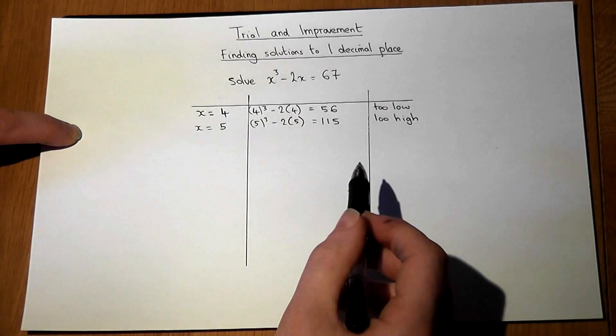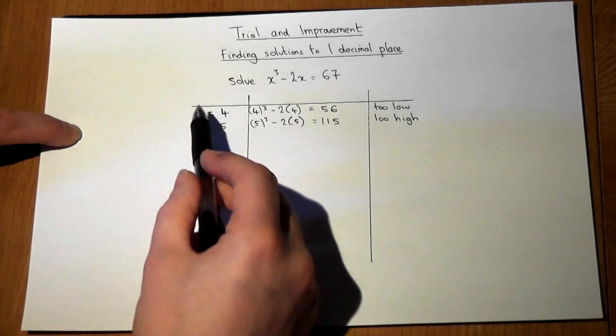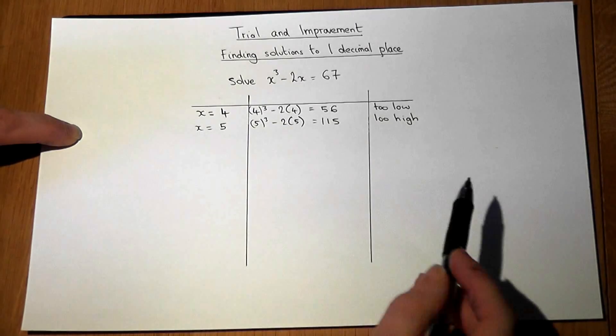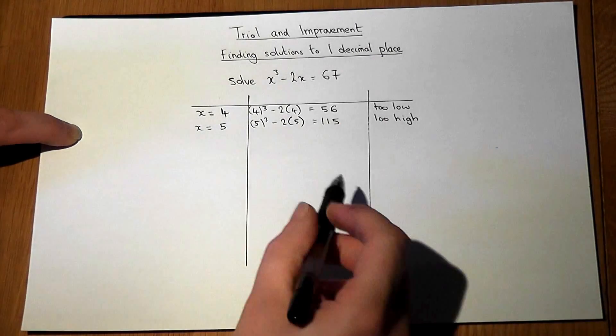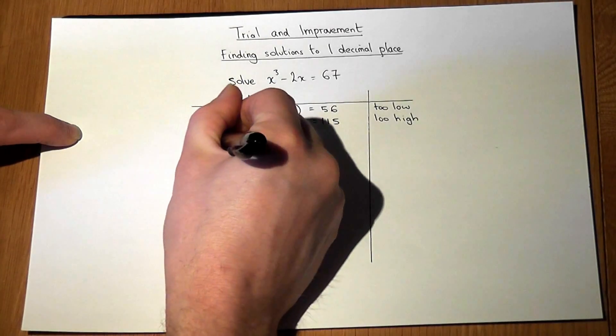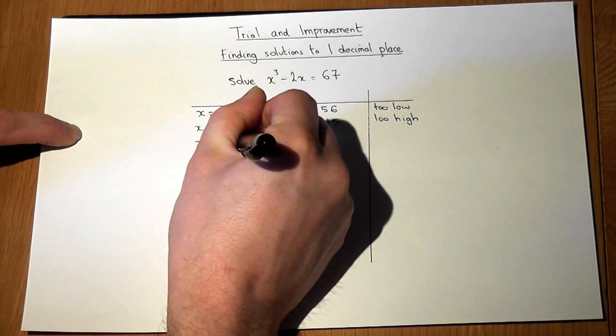So we've therefore established that our value of x is between 4 and 5. And we want x to 1 decimal place. So a good thing to try now might be 4.5, in between 4 and 5.